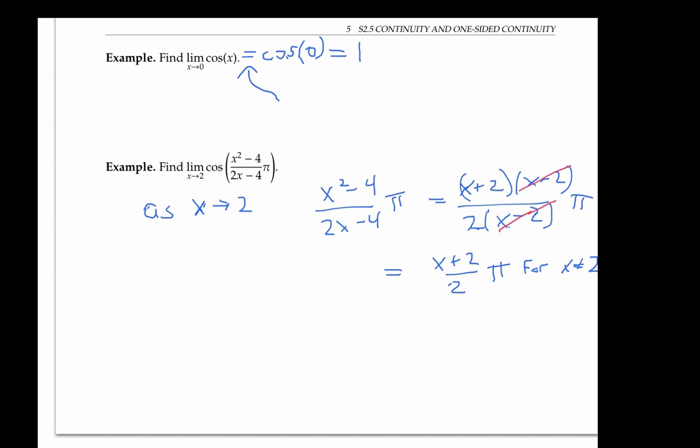For x not equal to 2, as x approaches 2, this expression here approaches 2 plus 2 over 2 times pi, which is just 2 pi.